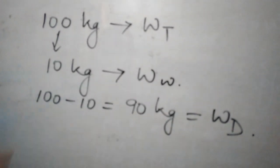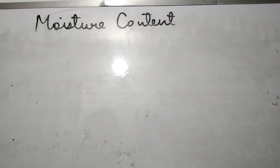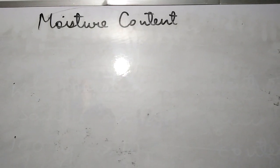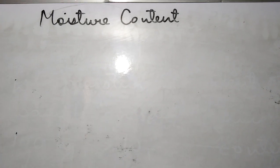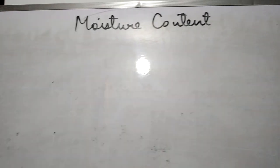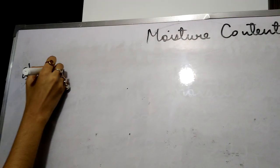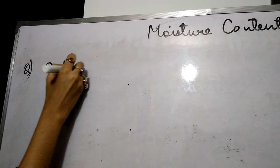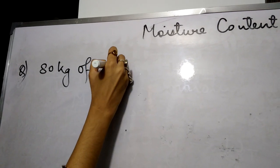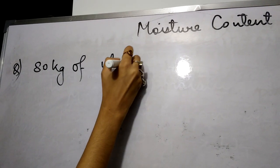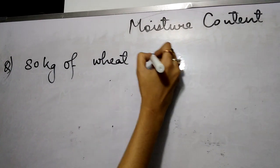Now let us solve a numerical based on this. This question has already appeared in the GATE exam. The question says: 80 kg of wet sample containing 10 kg of moisture has been dried to a moisture content of 8% wet basis in three hours under constant rate period of drying. The drying rate in kg per hour is?